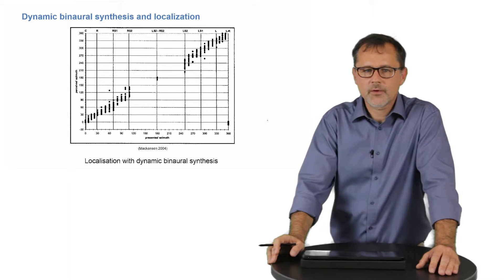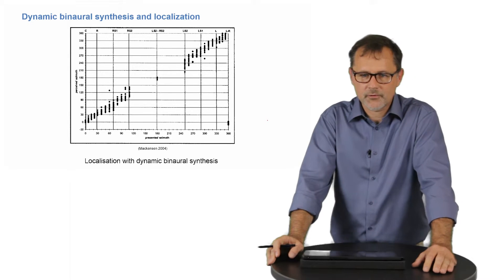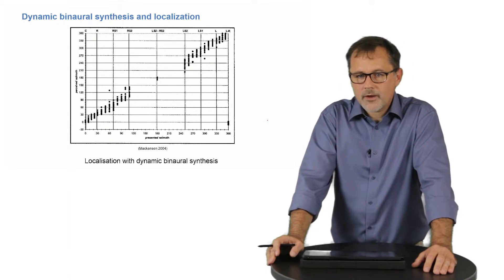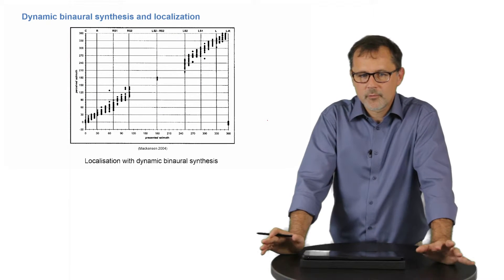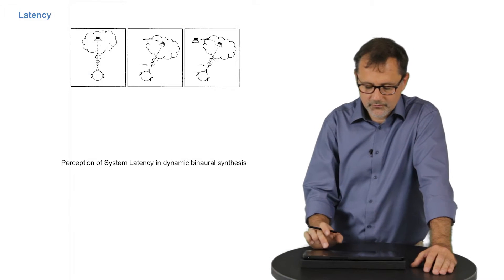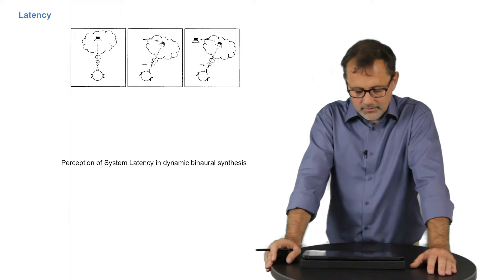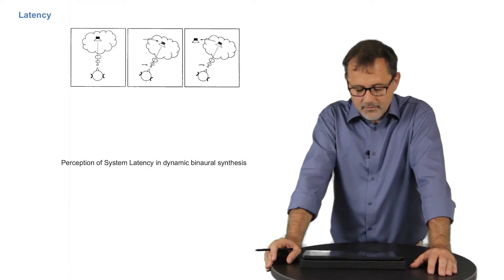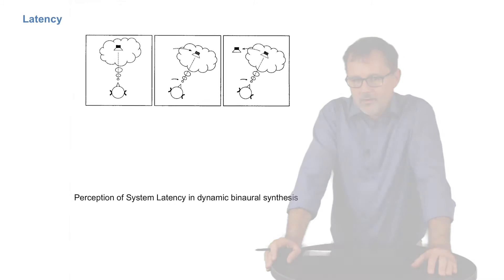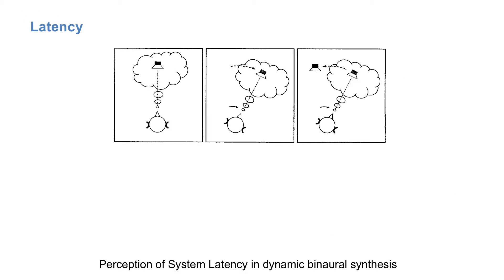The first question aims at the latency of a dynamic system. What happens if the exchange of binaural impulse responses takes too long? Until the exchange takes place, a sound source in front will move along with my head, and only after the exchange has happened, it will jump back to the original position.